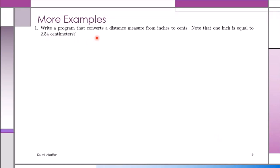We need to write a program that converts a distance measure from inches to centimeters. It doesn't say what to read or write explicitly, but it gives you the relationship: one inch is equal to 2.54 centimeters. So if the input is in inches, to get the answer in centimeters you multiply by 2.54.